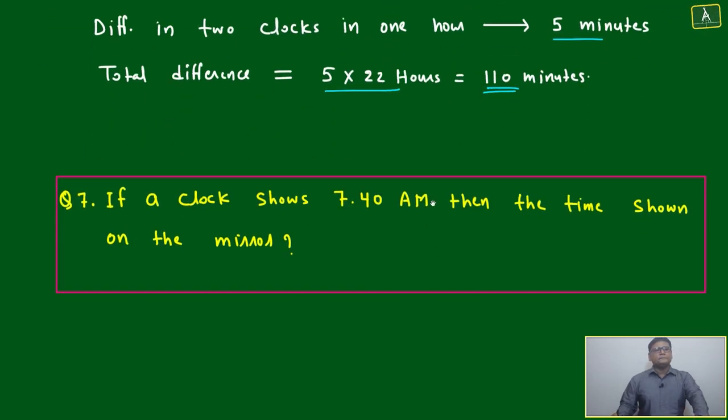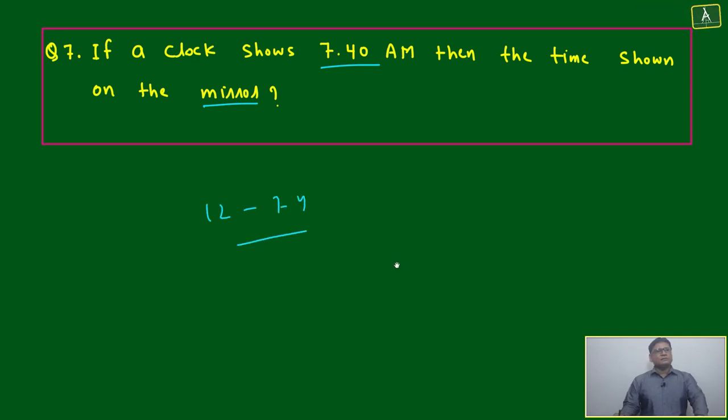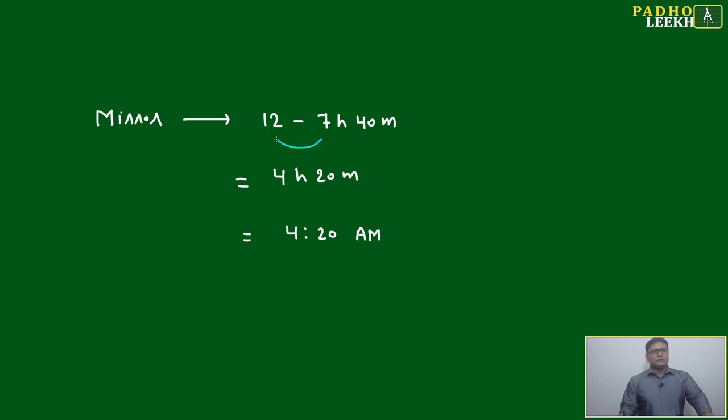Now we'll come to question number 7. It looks short and the solution will also be short because we only have to take the mirror image. 7:40 AM, then the time shown in the mirror - just simple calculation: 12 minus 7:40.